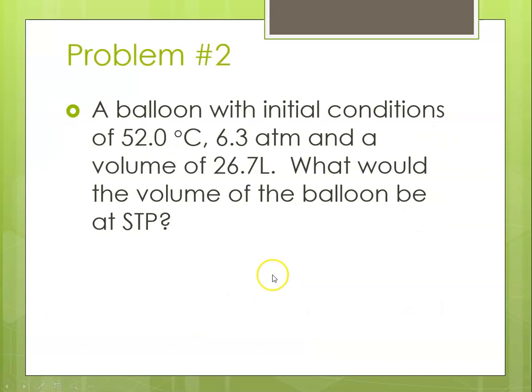Problem 2, a balloon with initial conditions of 52 degrees C, 6.3 atmospheres, and a volume of 26.7 liters. What would the volume be of this balloon at standard temperature and pressure? So now notice we've got temperature, pressure, and volume. That means that this is a combined gas law problem.